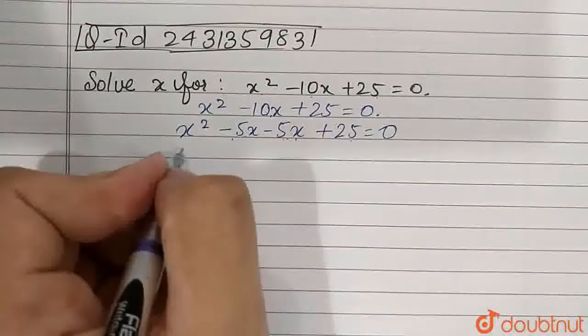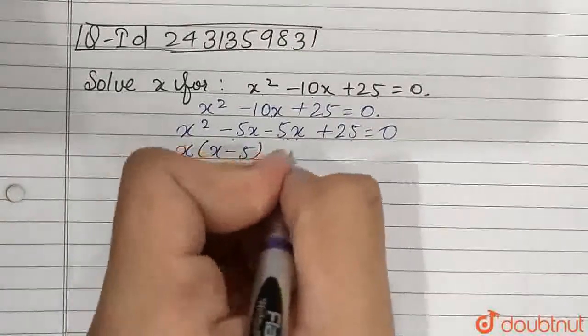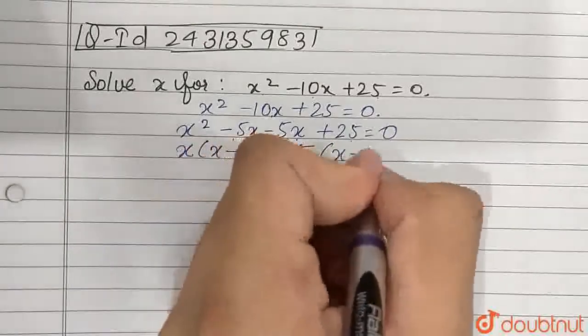Now let's take x common. We get x(x - 5). Here we have to take -5 common, giving us -5(x - 5).